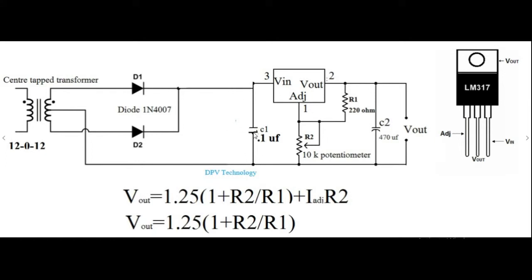We are using a 220 ohm resistor between output terminal and the adjustable terminal. Also we are using a 10k potentiometer between the adjustable terminal and the ground. The output of this circuit is given by the formula: V0 = 1.25(1 + R2/R1) + I_adjustable × R2.